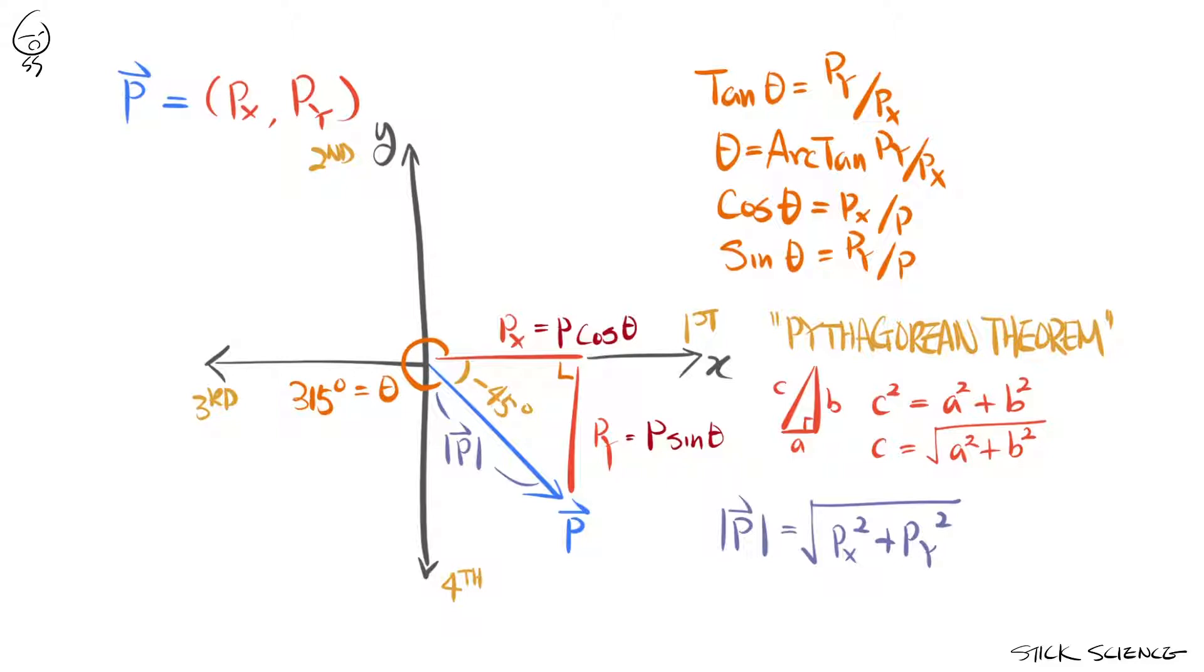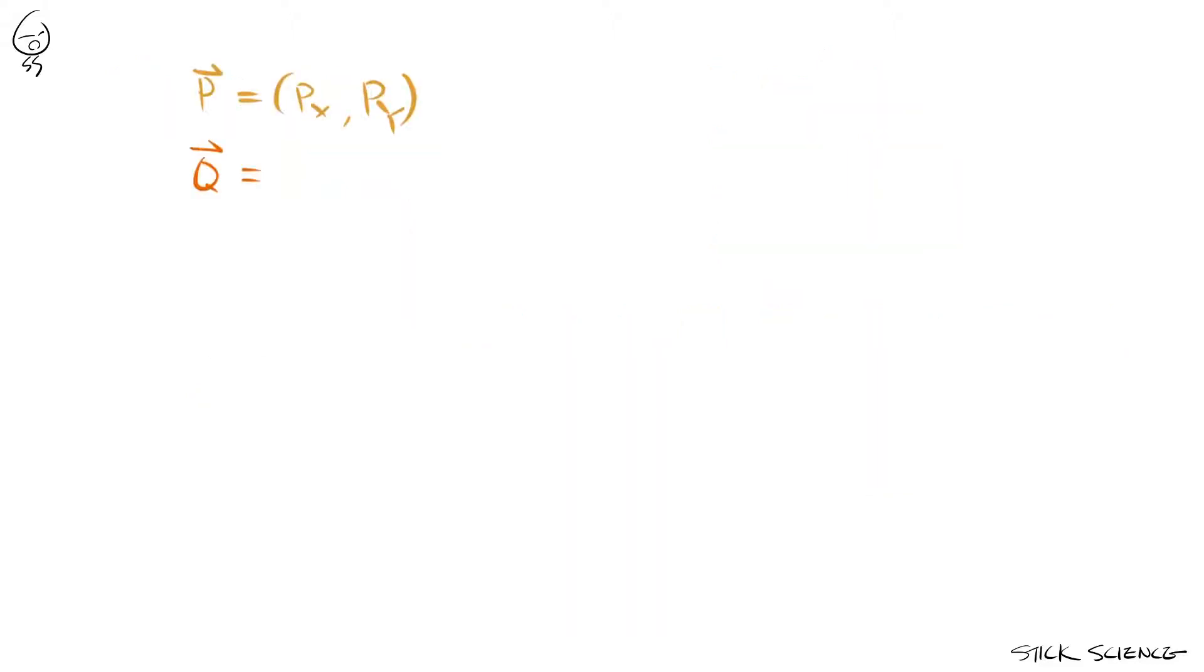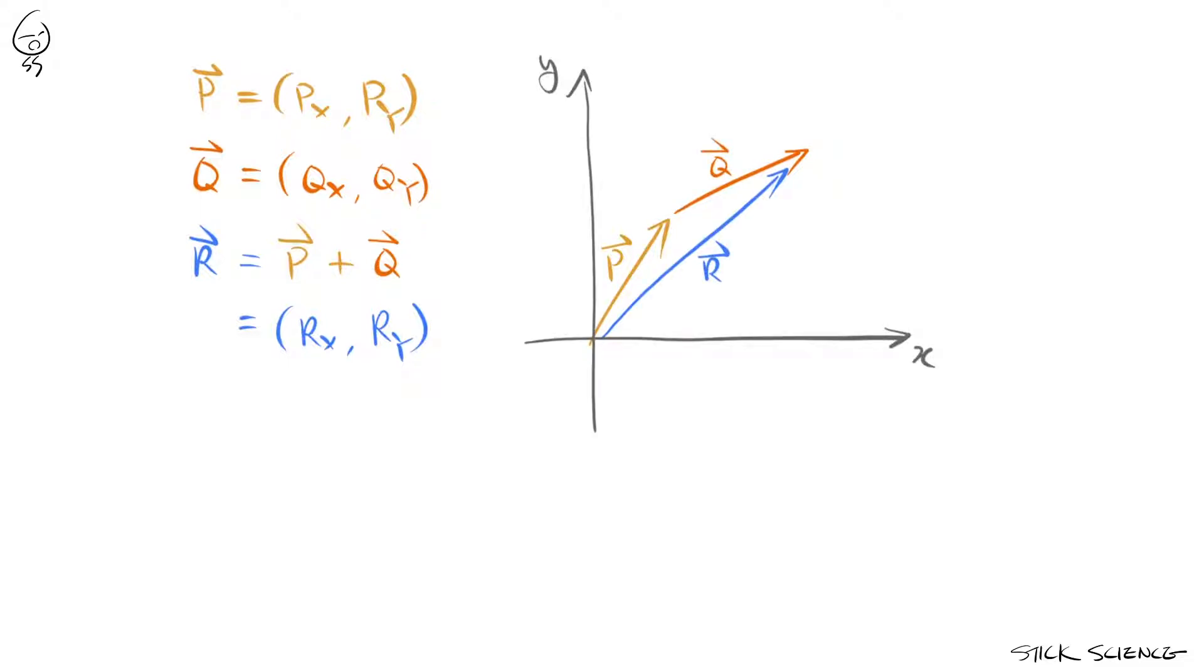Now we have everything to actually add vectors with precision. Let's say we have two vectors p and q, represented by their respective components px py and qx qy, and we want to calculate their sum vector r. Because the vector sum of vectors p and q can be expressed by placing the tail of vector q on the head of vector p, the resultant sum vector r must consist of components that are the result of adding the individual component of vectors p and q.